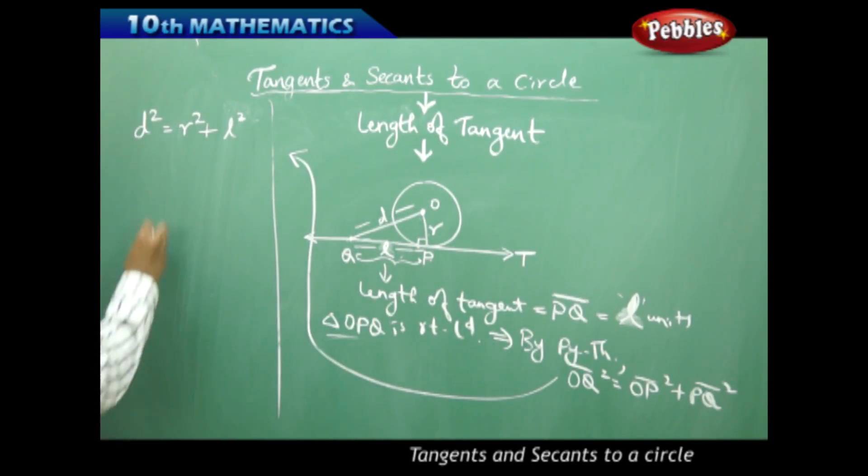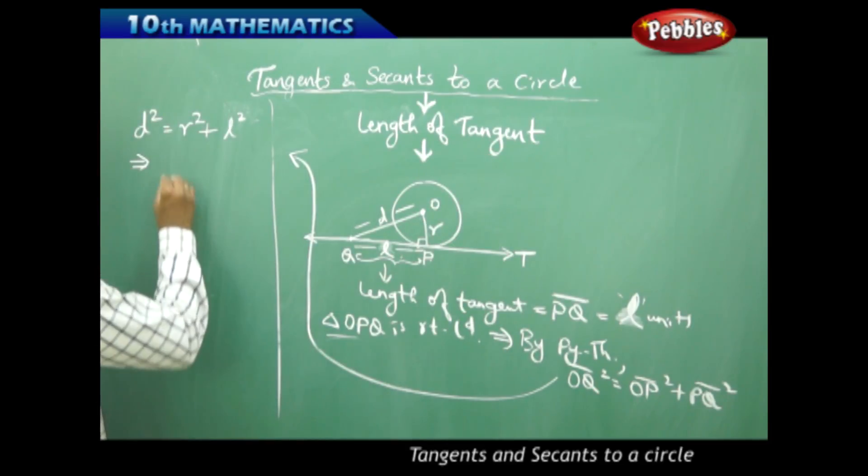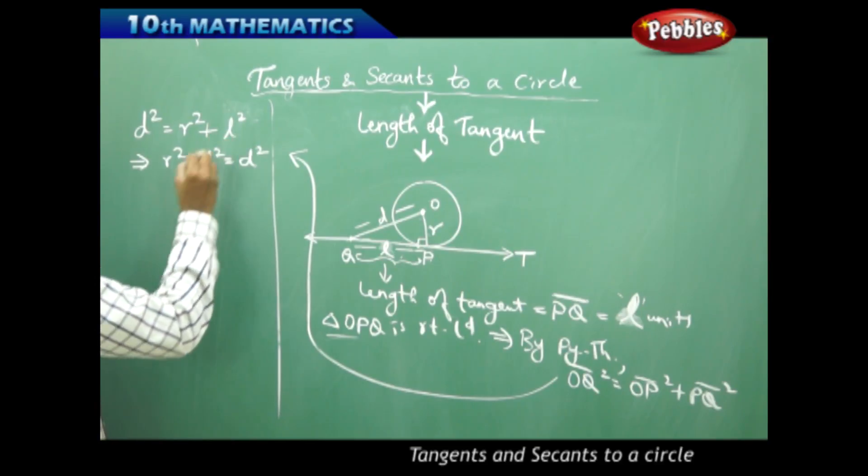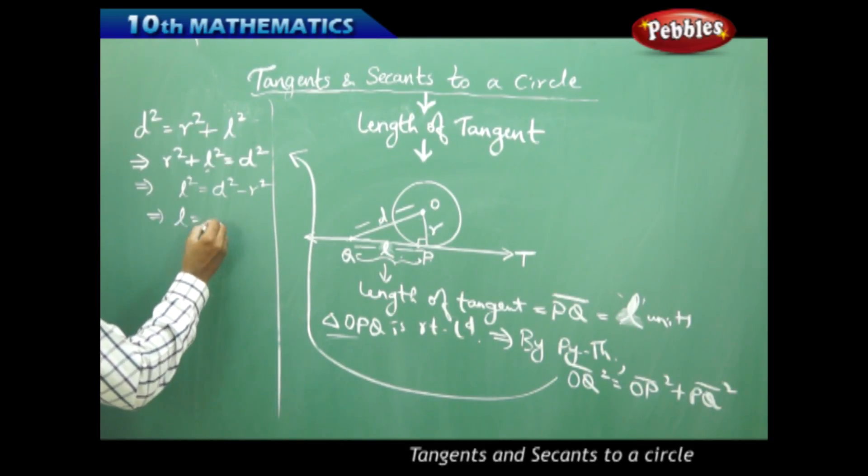Now to continue further, because I need to find the length of tangent L which is the topic of the session. Therefore I take R squared plus L squared on the left and D squared on the right. So because I need to find L, my L squared will be D squared minus R squared.